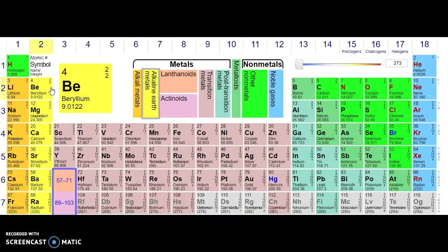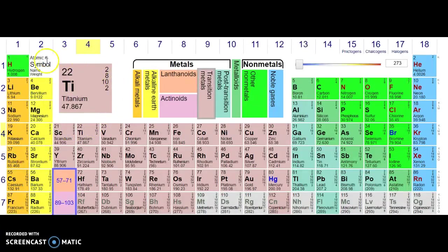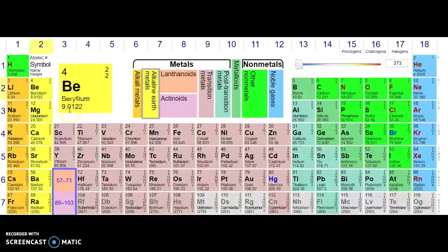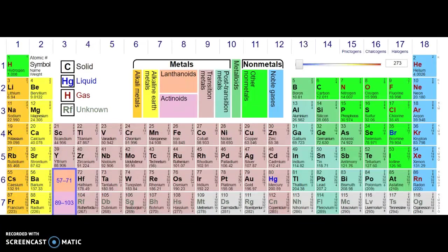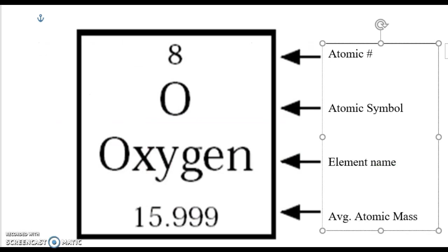Now, every periodic table is a little bit different. Some talk about electron configuration, which we'll dive into later, but I want to focus on the basic stuff — what each of these numbers means, how to read it, and how to figure out what exactly it's trying to tell you. A typical periodic table has a number at the top, the chemical symbol, and the element name.